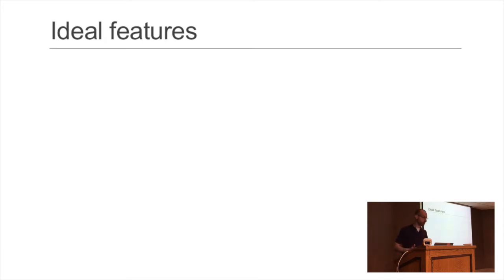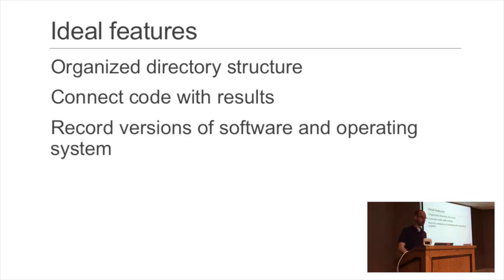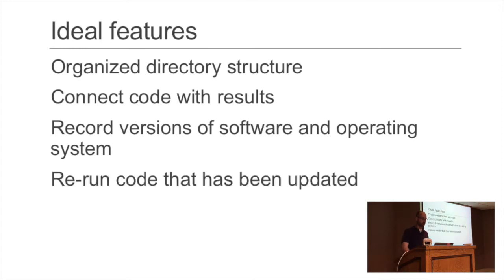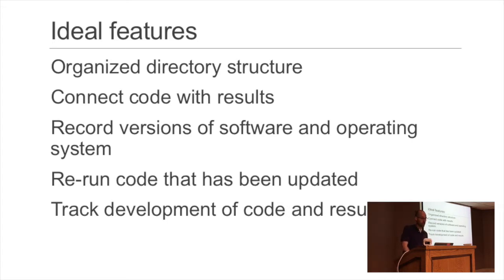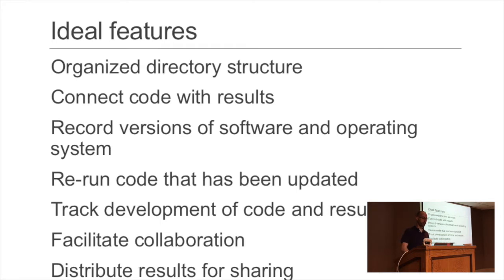So what were the ideal features I was going for? I wanted an organized directory structure, the ability to connect a coder's results so I could see what decisions and cutoffs they used, and to know the computational setup — versions of packages — because we'd all be using our own local systems or our compute cluster. I also wanted to find and rerun outdated analyses, track development of code and results, facilitate collaboration without emailing files, and easily distribute results to collaborators and the wider scientific community.